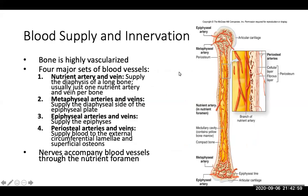Regarding blood supply and innervation: bone is highly vascularized, meaning there are many blood vessels running through it. There are four major sets of blood vessels that supply bones, and nerves accompany blood vessels through the nutrient foramen, which is the hole through which they both travel.